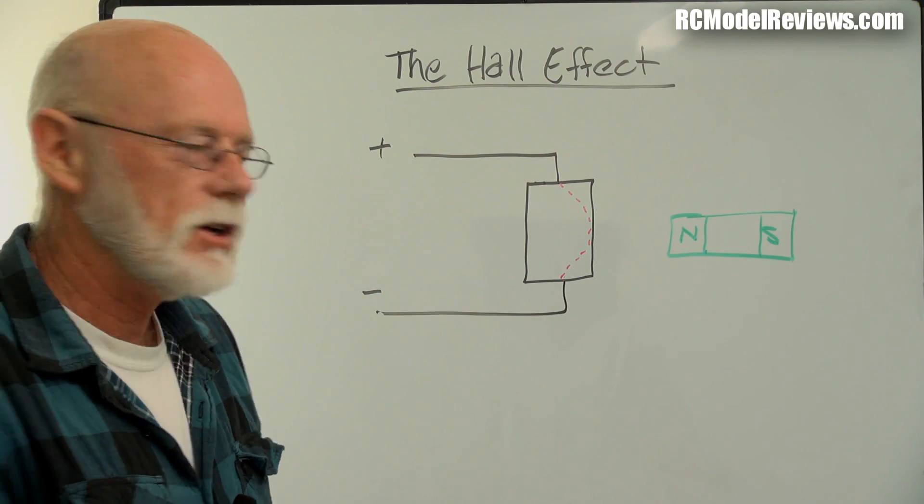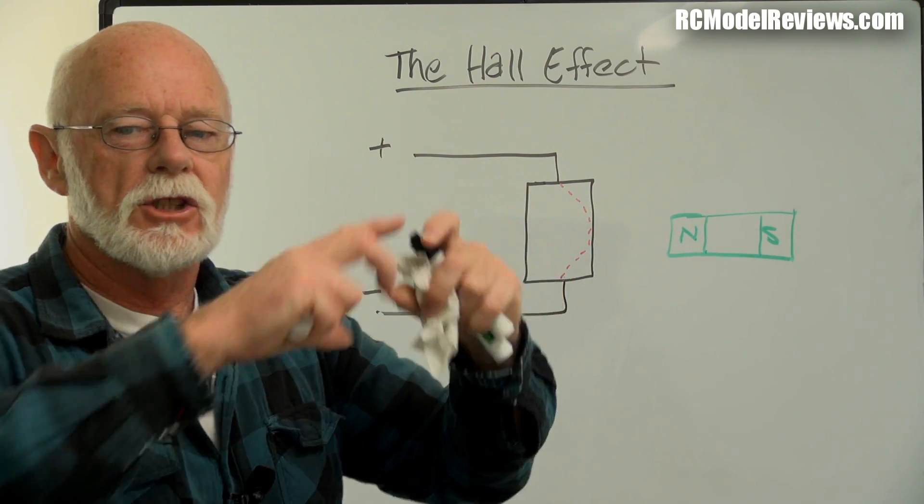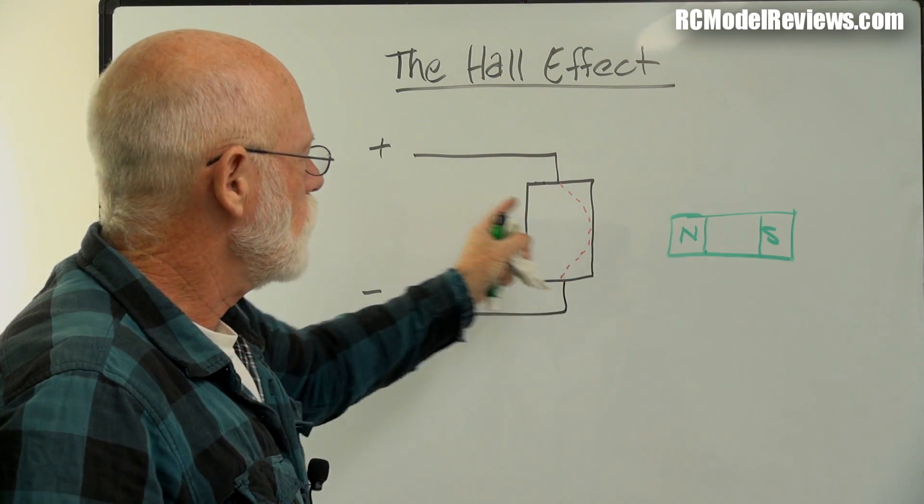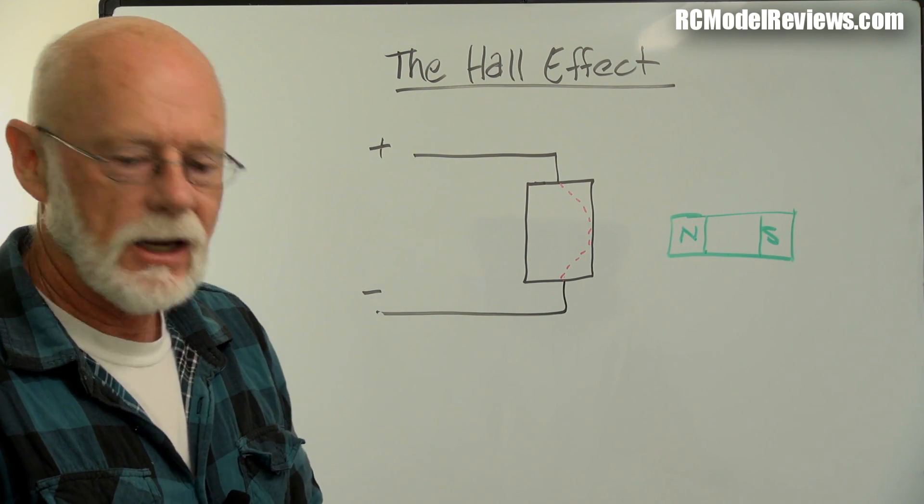So instead of our electrons travelling directly through our conductor, what's going to happen? They're going to be sucked over to one side by the magnet. Makes sense, doesn't it? That's what magnets do. Now we have an interesting situation. Because within this material, we have electrons roaming around from the shell of one atom to the shell of the next, bouncing around. But they're all accumulating on one side.